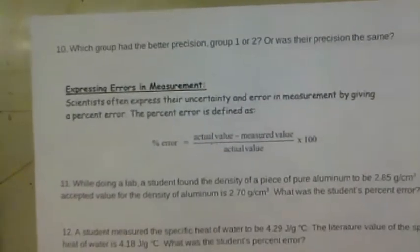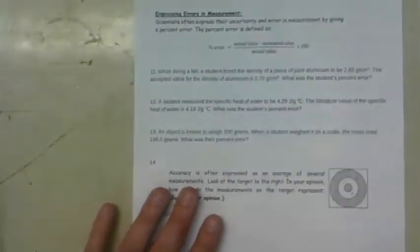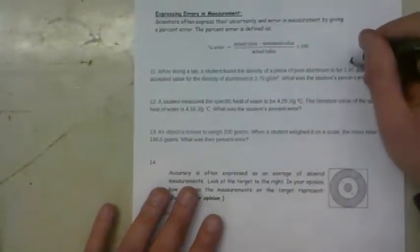Let's look at number 11 here. Number 11 says while doing a lab, a student found the density of a piece of aluminum to be 2.85 grams per cubic centimeter. So this is their measured value.